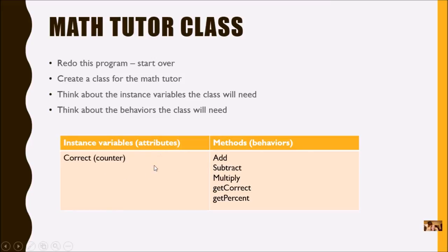We're going to start off pretty simple and then add some things. Right now at our very beginning, we're going to start with just one instance variable. Our MathTutor class is going to need to keep track of all the problems you answer correctly, so we'll have a `correct` variable as a counter. The main behaviors that need to happen are add, subtract, and multiply — we didn't do division because it was difficult to get the exact answer. Then we need to be able to return back to the main program the number of correct answers with a `get_correct`. We'll also include a percent method. We'll start with these behaviors and add more methods as we go, and in the end it'll do the exact same thing.